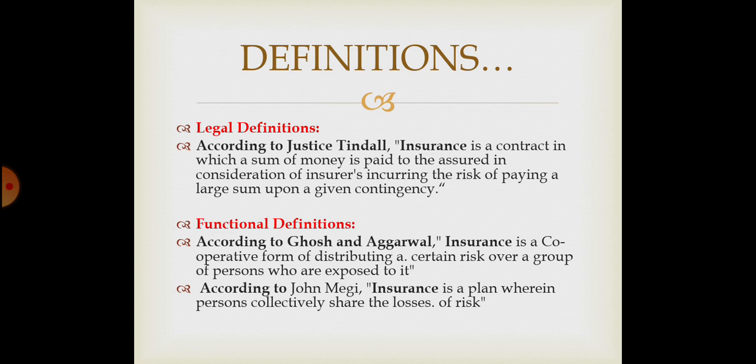According to John Magee, insurance is a plan wherein persons collectively share the losses of risk. That is why insurance is a plan where many persons take their insurance according to the risk, and the risk of loss is collectively shared. Diversification happens.